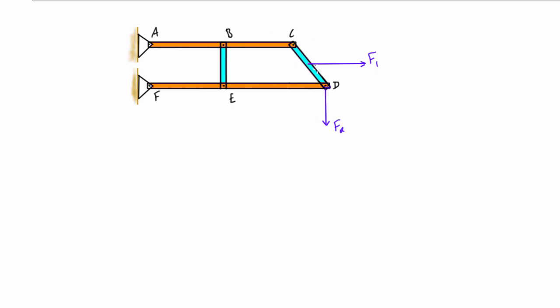This guy CD looks like there's going to be something at the pin here. This member ABC will be pushing or pulling on it, something from this pin from FED will be pushing or pulling on member CD, and then there's also this third force F1. So this would also have three forces acting on it.